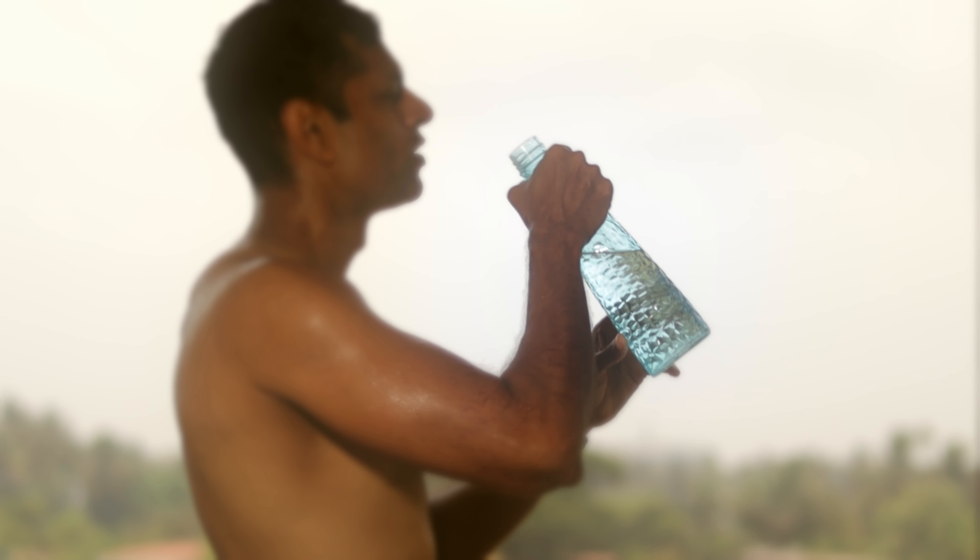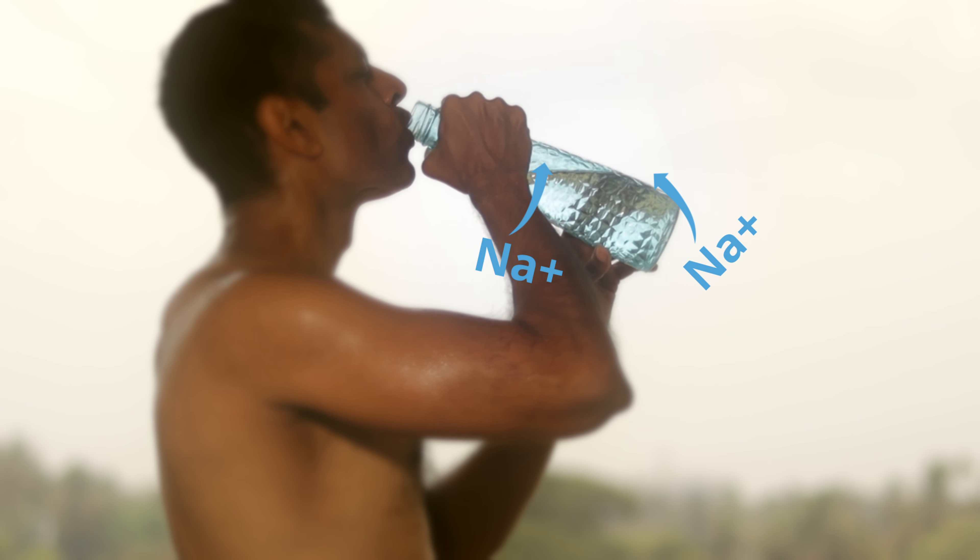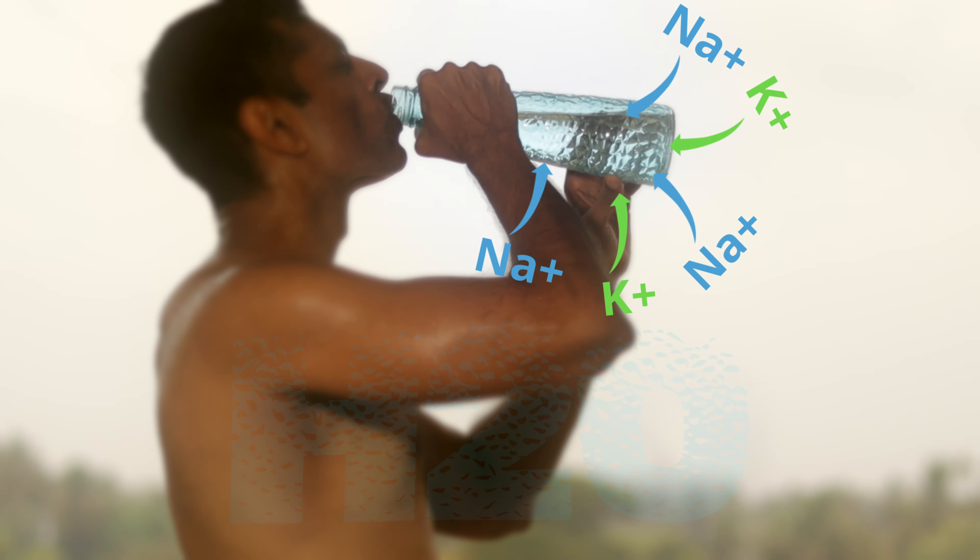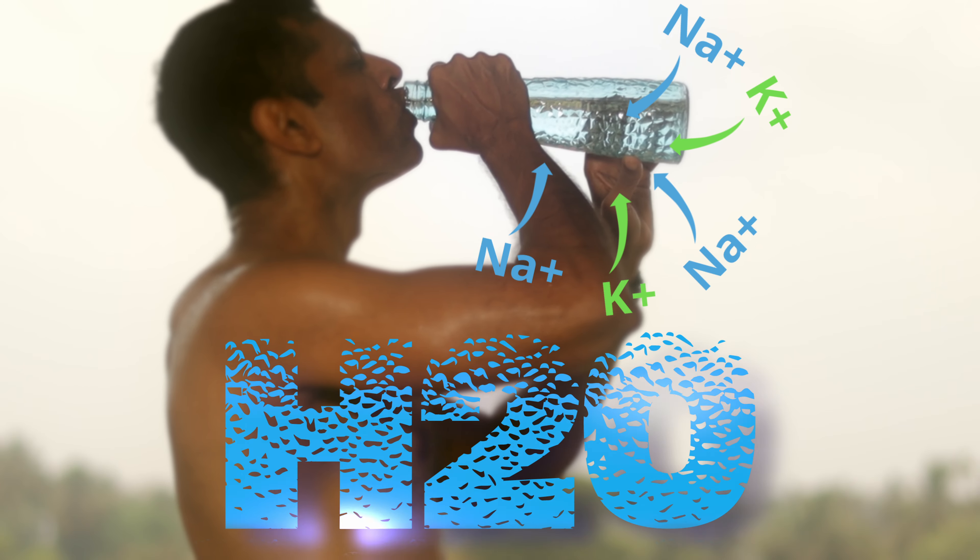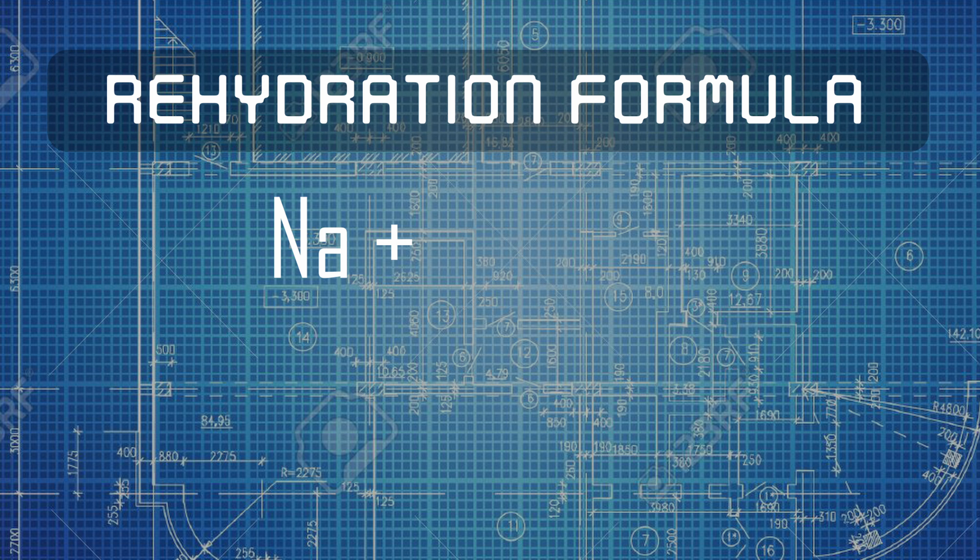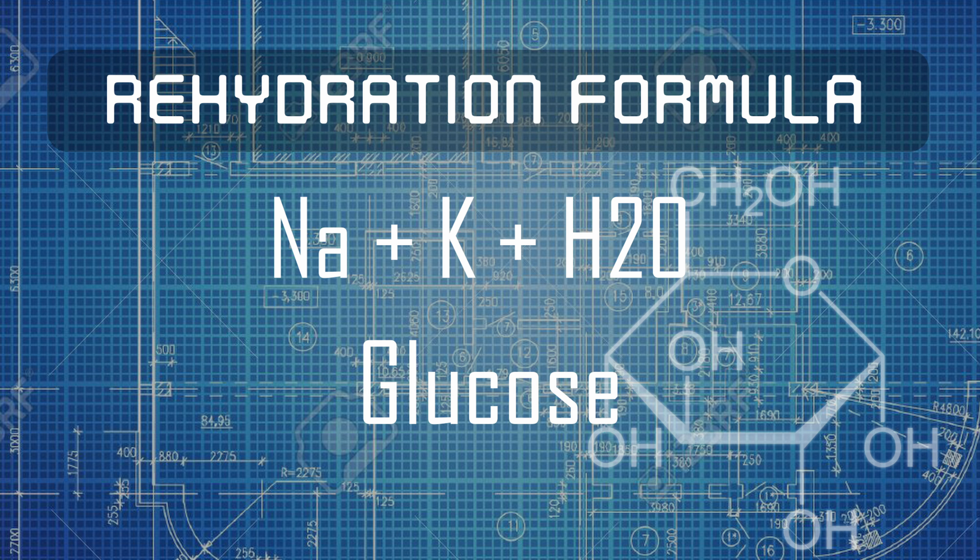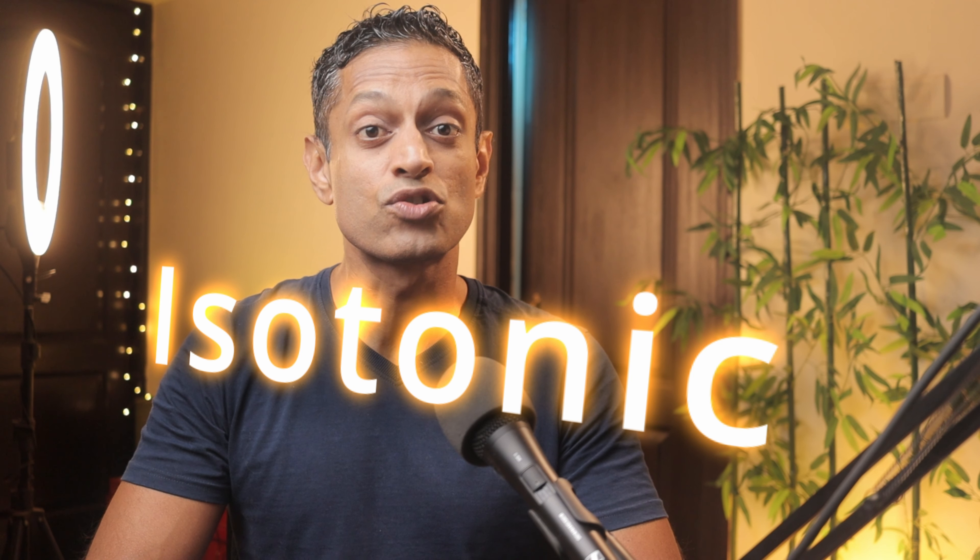A rehydration solution is a product which replenishes electrolytes, more specifically sodium and potassium, and of course water which is lost during excessive sweating, such as during intense exercise or during a hot day. Addition of sugar or glucose to the mix makes it an isotonic rehydration solution which is an ideal mix during intense cardiovascular exercise.